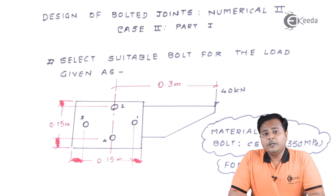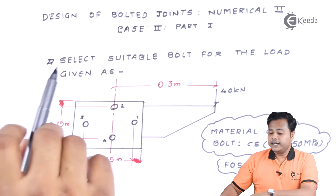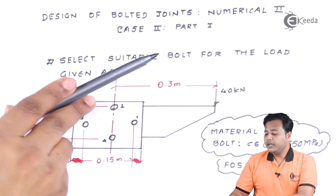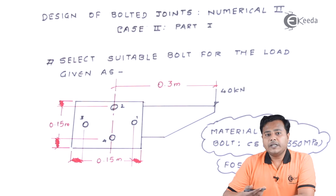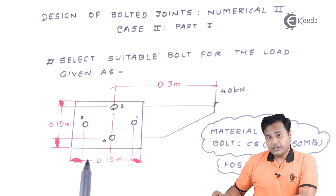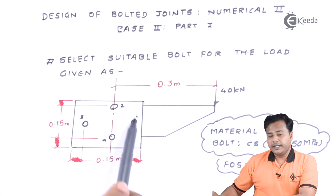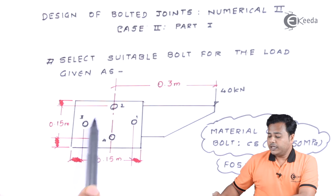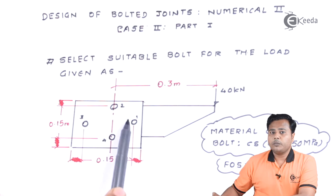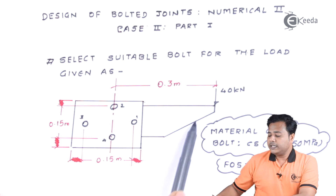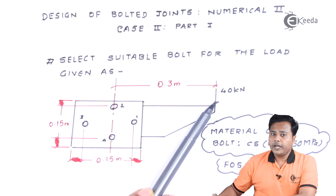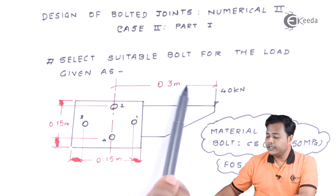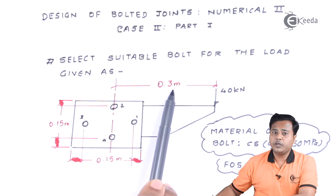You can see the problem statement on your screen now. It says to select a suitable bolt for the load given as shown. The sketch is very simple — it shows a plate with four bolts. There is an extension on which the load is acting, and the load magnitude is also given. The eccentricity at which the load is acting is 0.3 meter.